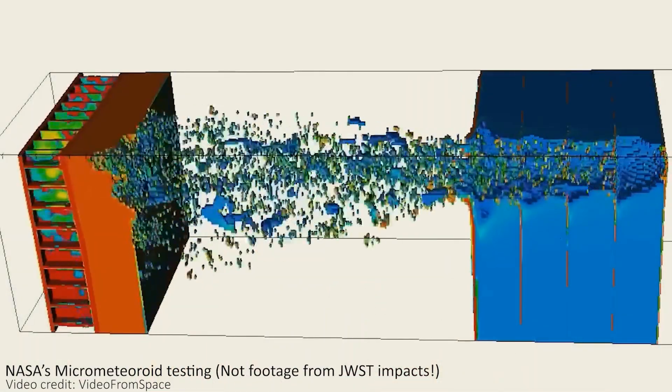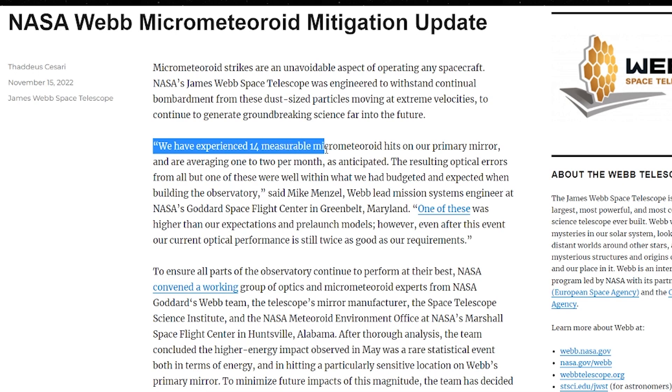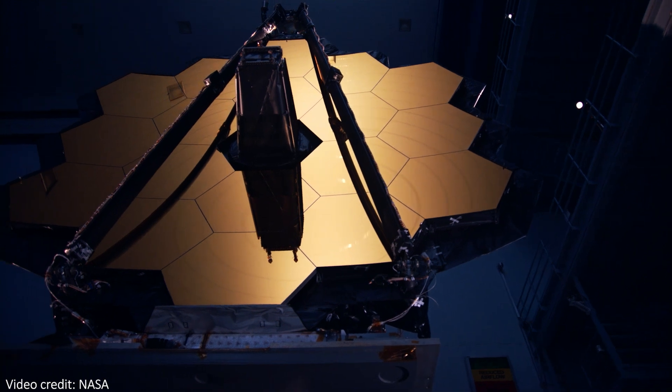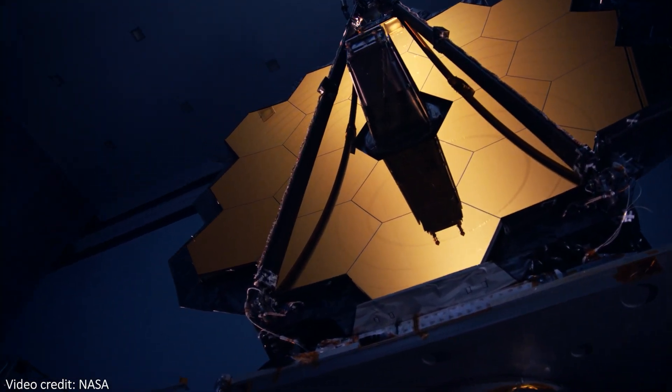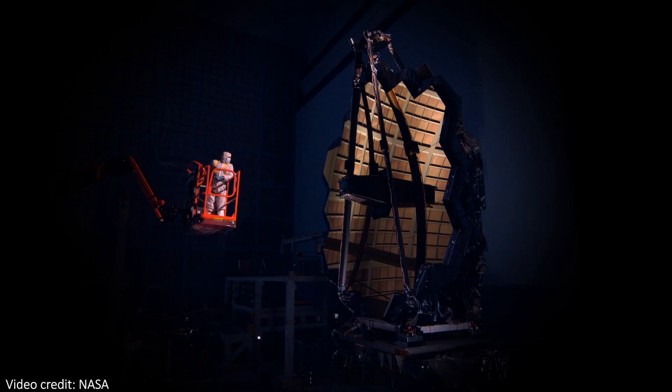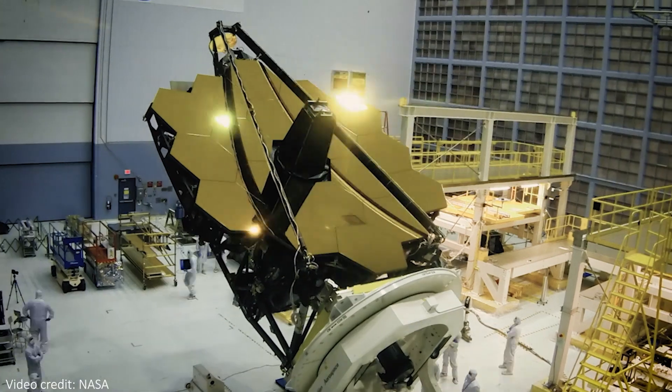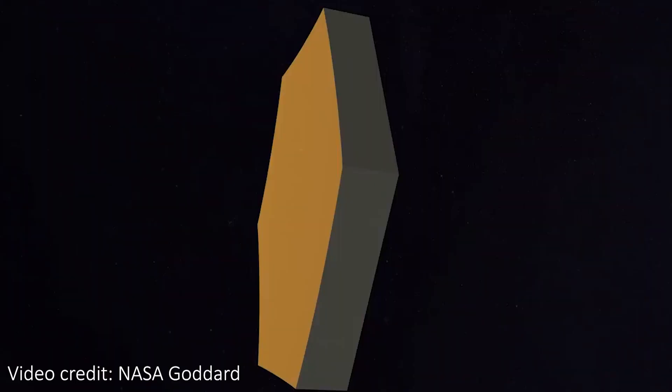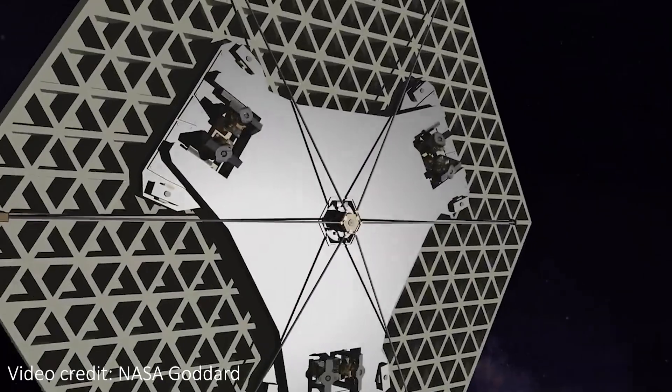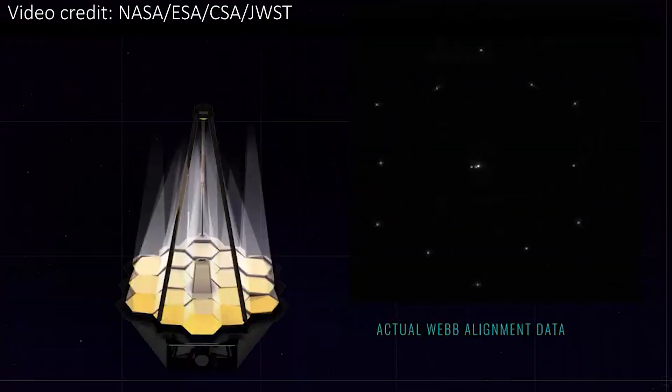JWST has been hit 14 times since it launched and unfolded. That's once or twice a month on average and is pretty much the exact frequency we expected ahead of time. It's always nice to get these small things right. The small optical errors these impacts result in are well within the budget and they can be mitigated by readjusting the mirror segments slightly to refocus the light.